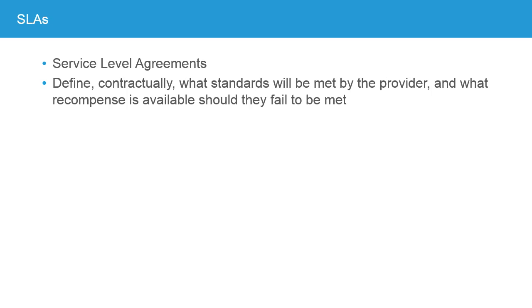Another term to be very aware of is SLA, or Service Level Agreement. An SLA at its simplest level defines by contract what standards are going to be met by the provider, and what recompense is available to you if they don't meet that standard. Even on an internal private cloud, SLAs are useful because they define expectations. When you're paying money for a service, it makes it very clear what you expect. Every contract for a service should include a service level agreement, and it's key to understanding and comparing the offerings of different providers.